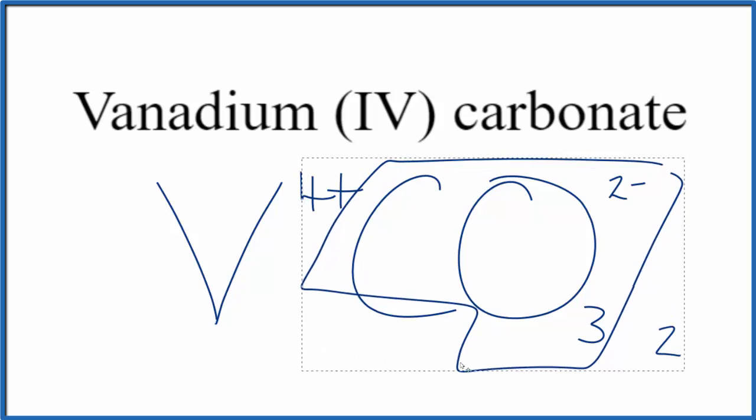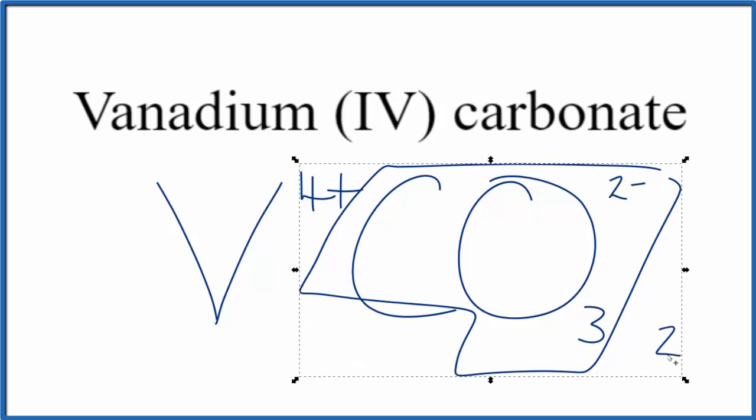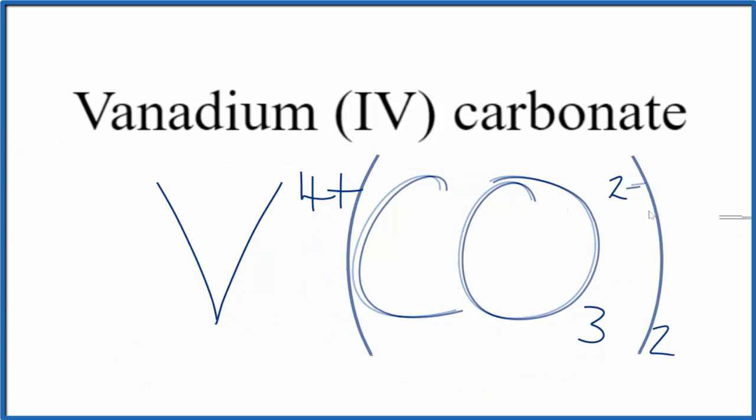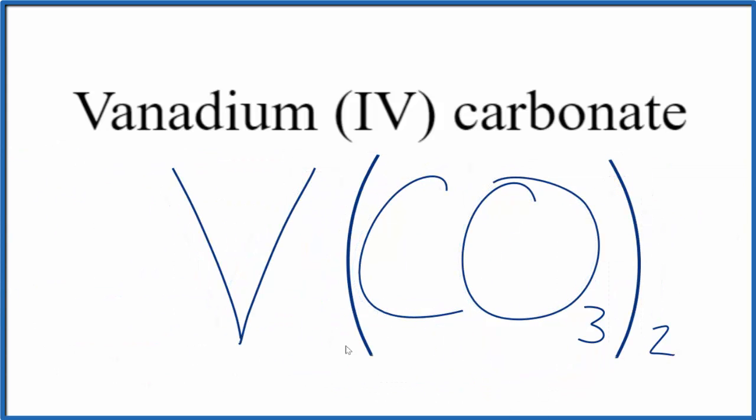We would need parentheses around the carbonate ion because we have two of them. This is the formula for vanadium (IV) carbonate: V(CO3)2.